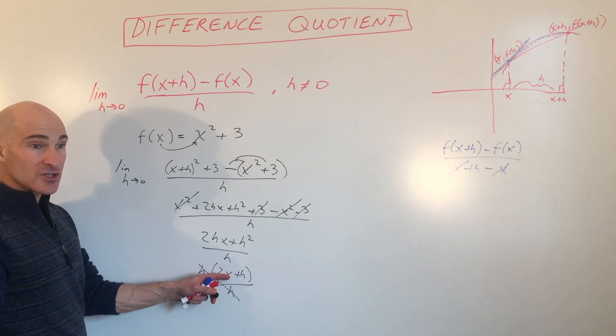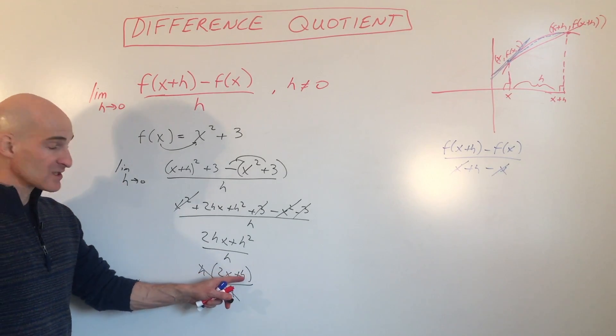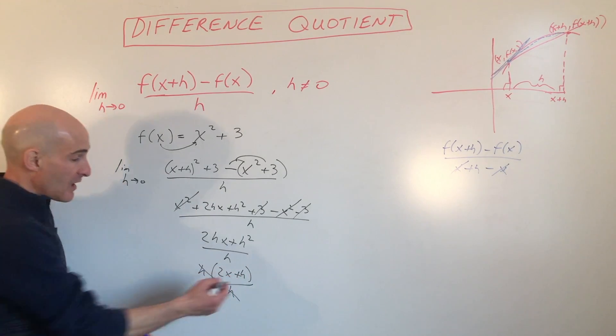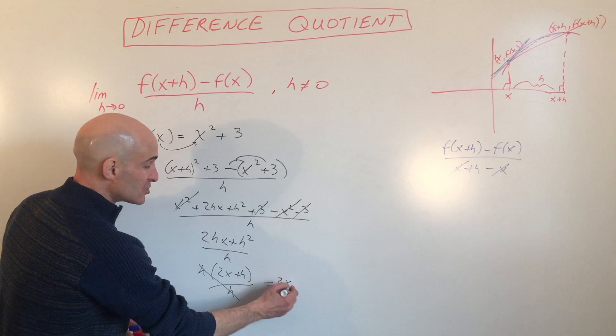This is our final result, but if we take the limit as h approaches zero, we substitute zero in for h here, and we get 2x.